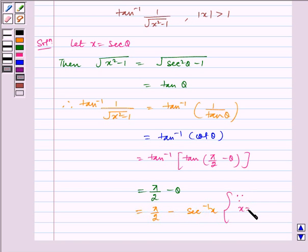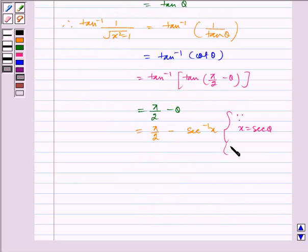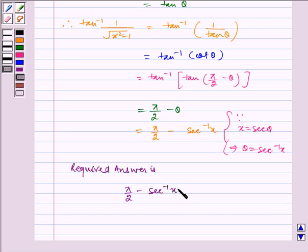Because x is equal to sec theta, which implies theta is equal to sec inverse x. Therefore, the required answer is pi by 2 minus sec inverse x.